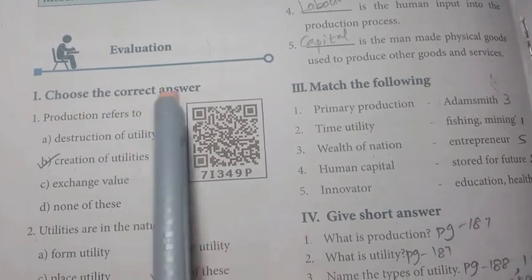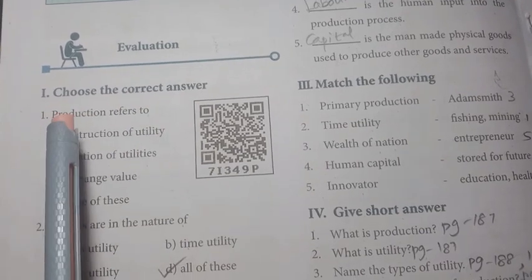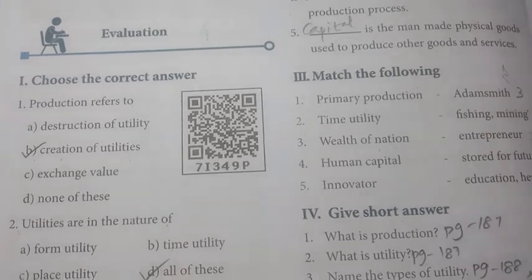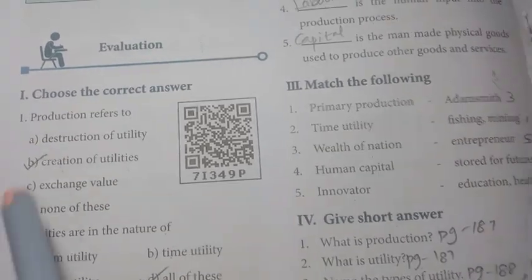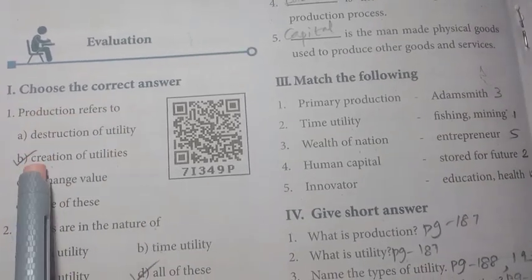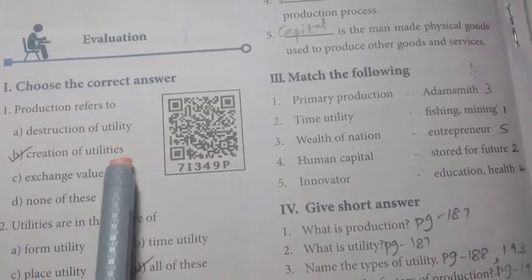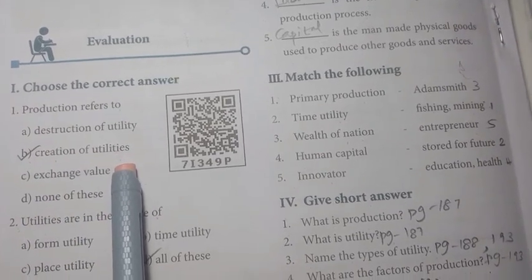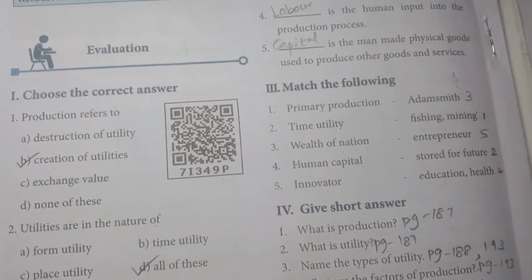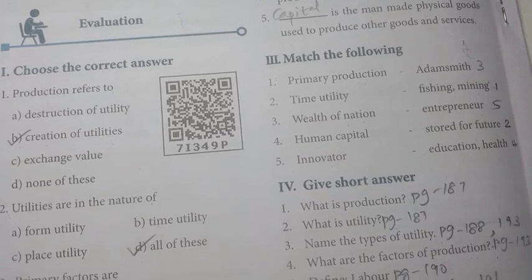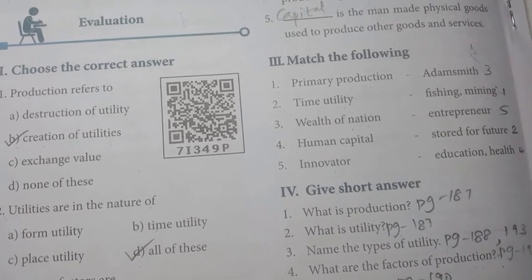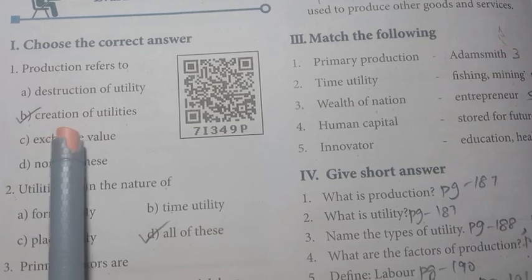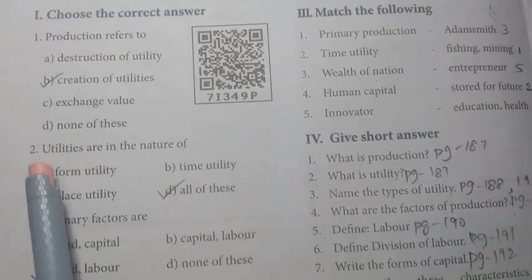Roman numeral 1: Choose the correct answer. First one is about production. Production refers to the creation of utilities. That is, the creation of utilities is called production.